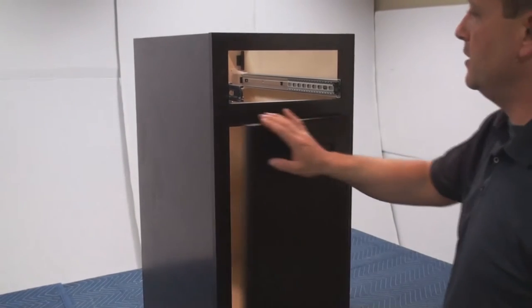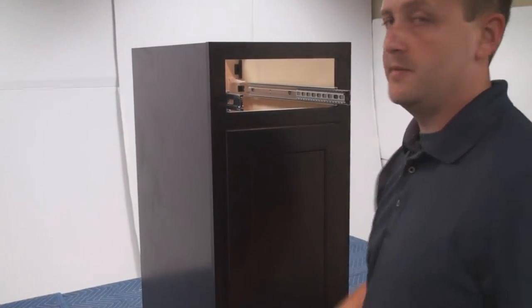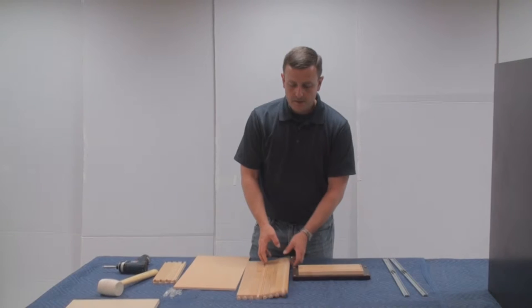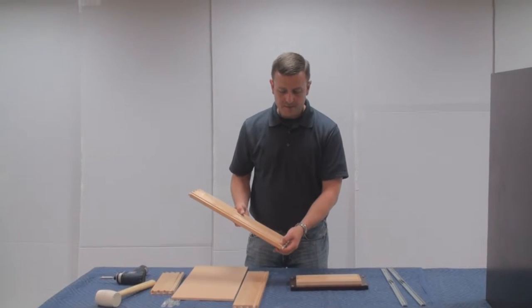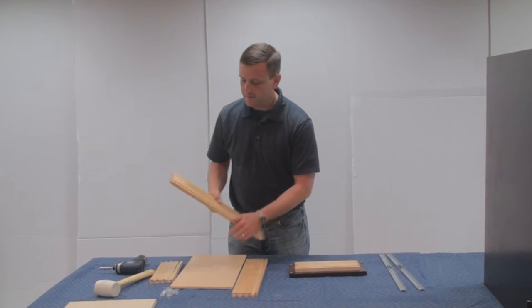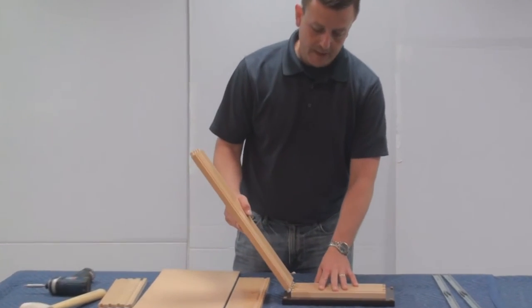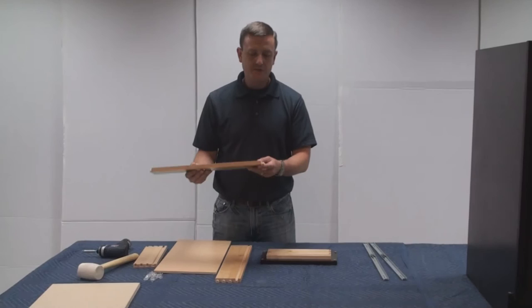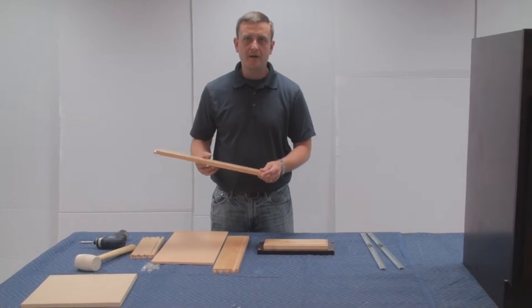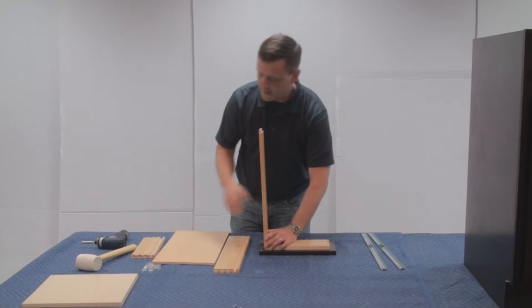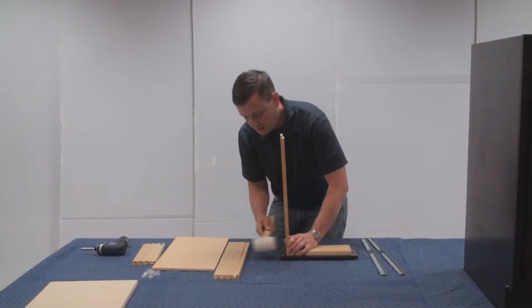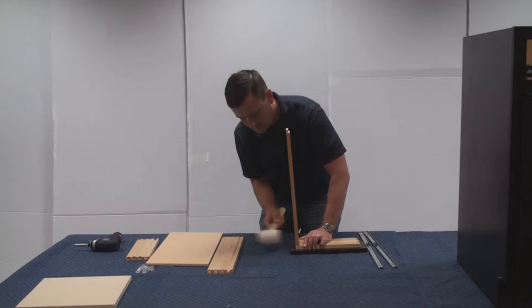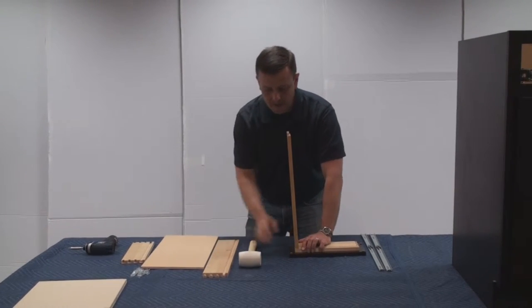Now that those are installed secure, we'll leave those be and we'll start assembling our drawer. Next we're going to go ahead and assemble the drawer. Now the sides and the face have the dado that will receive the bottom and then the back will go on last. Right now we're going to go ahead and align these dovetails. If your dovetails have any extra material, go ahead and take a piece of sandpaper and clean that off. That's just from machining, that way they'll fit together a little tighter.